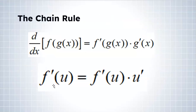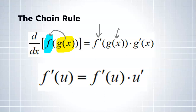Here is the chain rule. We have a function g plugged into a larger function f — that's our composite function. The chain rule says: start by finding the derivative of f with g left inside that derivative. So literally, find the derivative of f with g plugged inside of it. Then multiply that by the derivative of the inside function g of x.